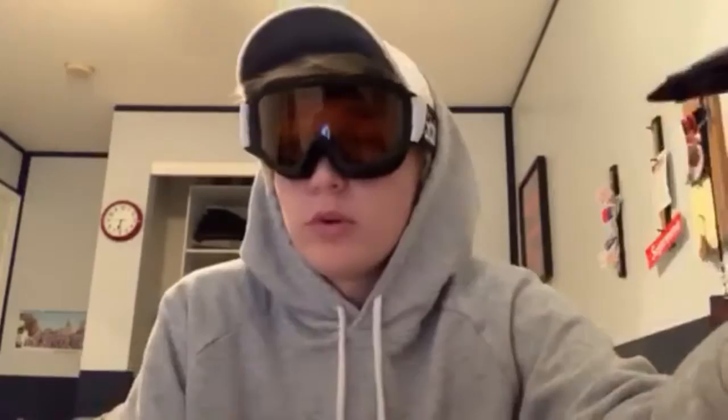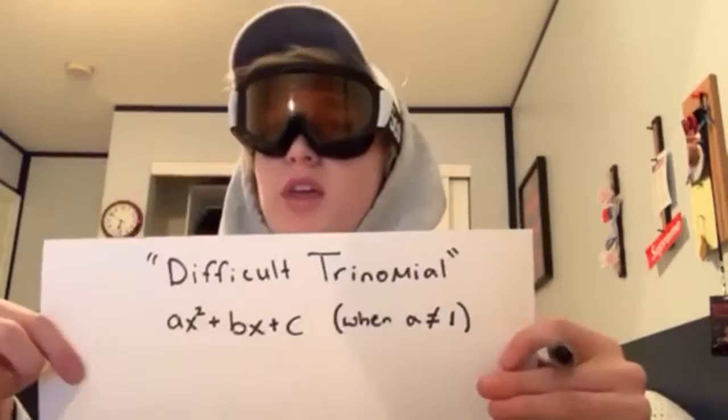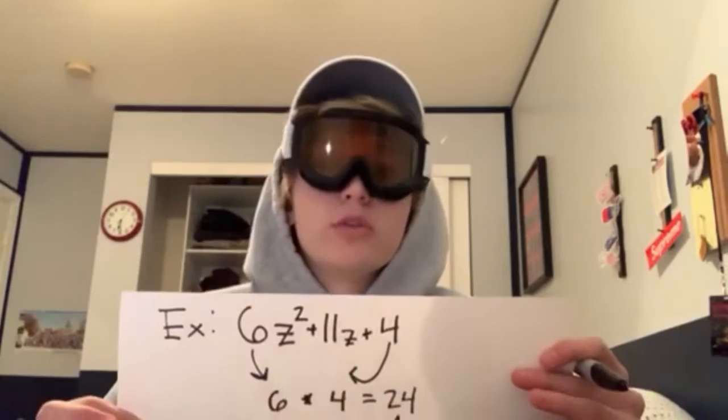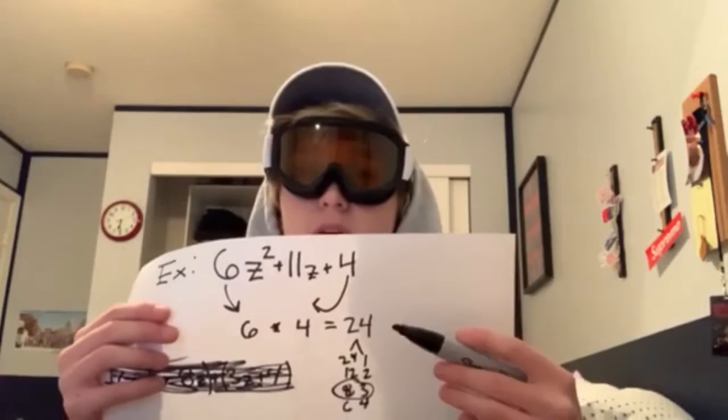Now I'm going to teach you how to solve what is known as a difficult trinomial. A difficult trinomial is set up as ax squared plus bx plus c when a does not equal 1. An example of a difficult trinomial would be 6z squared plus 11z plus 4. To solve these, you multiply the a value by the c value. The product in this case is 24, and you break it down into its factoring components.